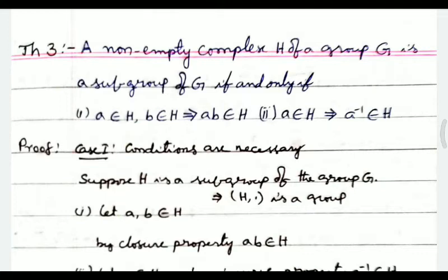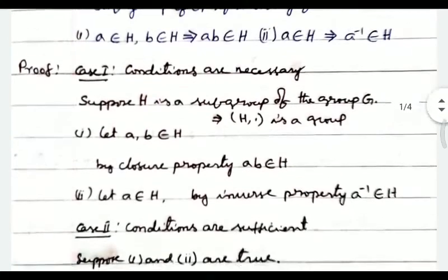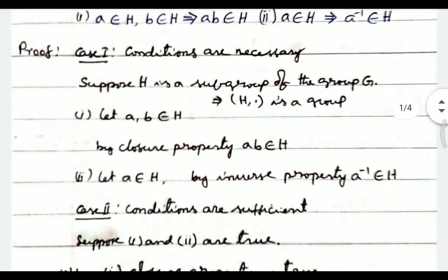Proof. Case one: conditions are necessary. Suppose H is a subgroup of the group G. Since H is a subgroup, it operates under the same operation, which implies H with dot is a group.